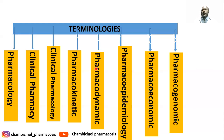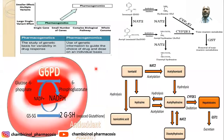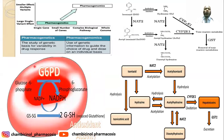Some enzymes responsible for drug metabolism are linked to genes. Deficiency, abnormality, or absence of these enzymes can lead to toxicity upon administration of a particular drug. For example, in the case of an individual with deficiency of glucose-6-phosphate dehydrogenase (G6PD).